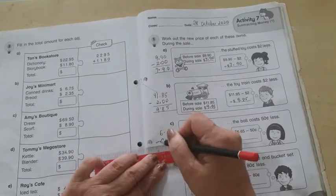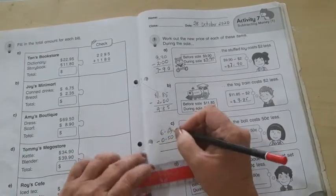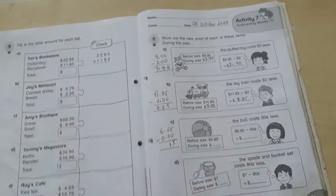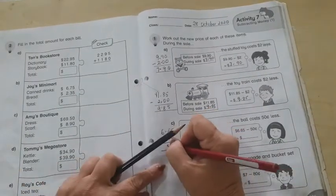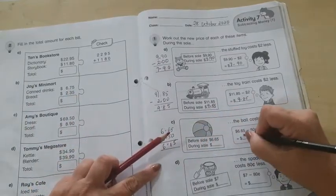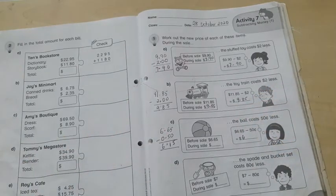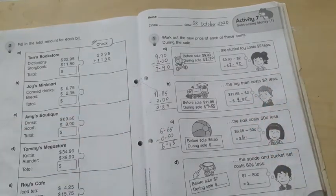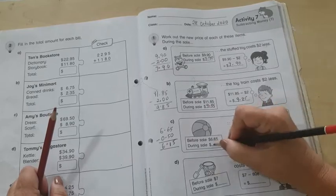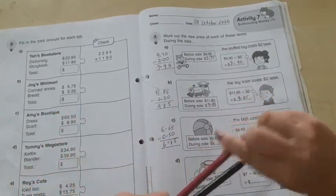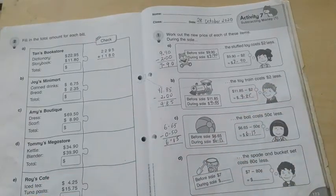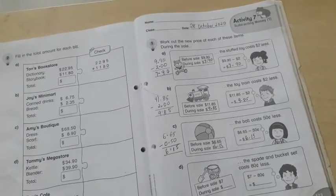All right. So, 5, 6 minus 5 is 1. Put the decimal point and 6. So, the answer is $6.15. Please make sure the decimal point is in red. Okay. All right.